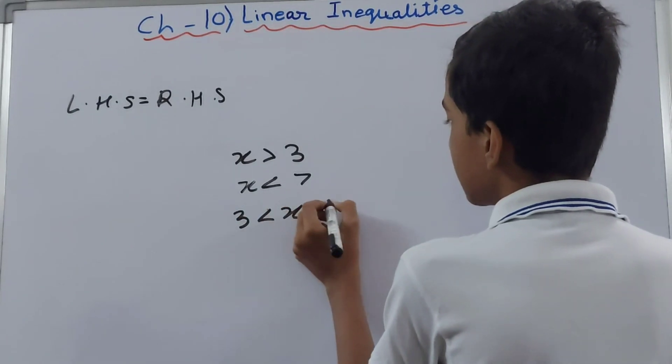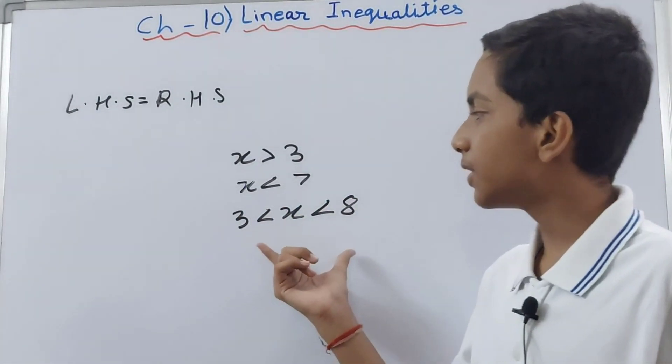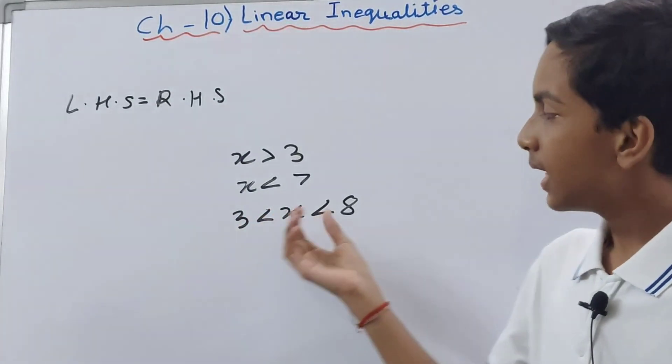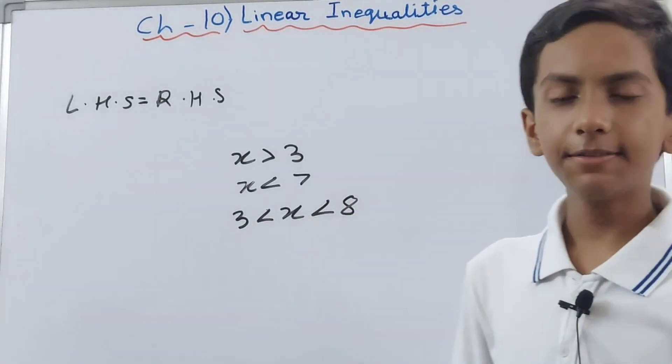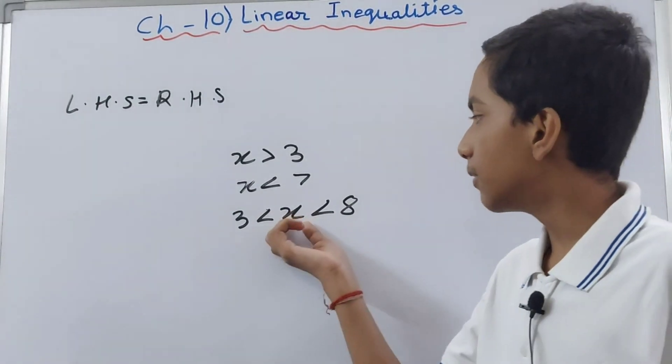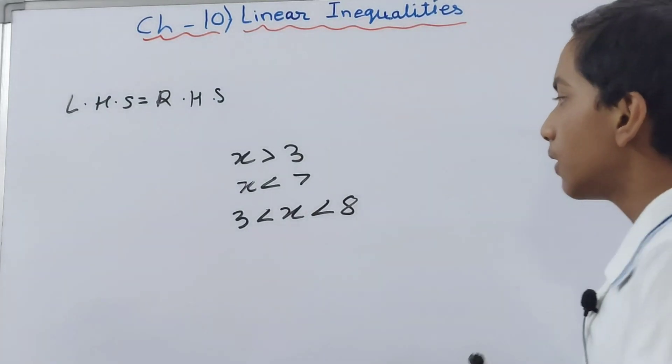In this inequality, the value of x is more than 3 and it is less than 8, so it can be 4, 5, 6, or 7—any value can be this value of x out of the four numbers.